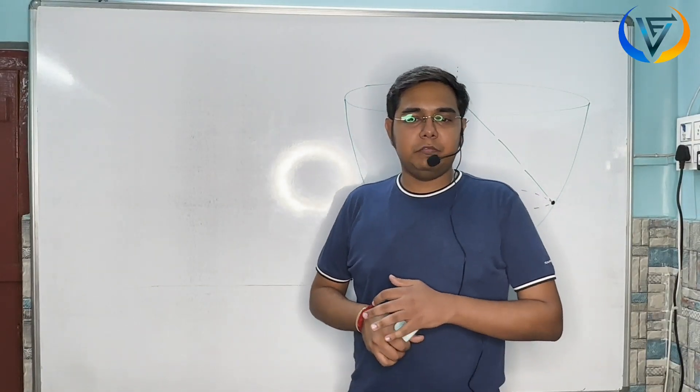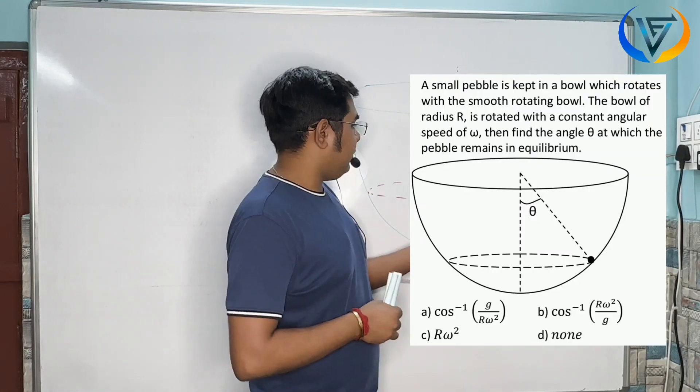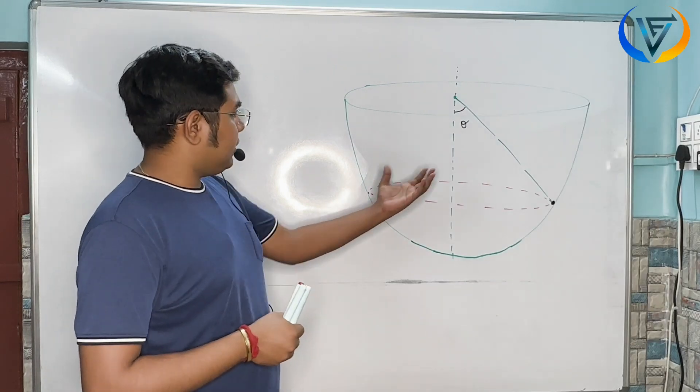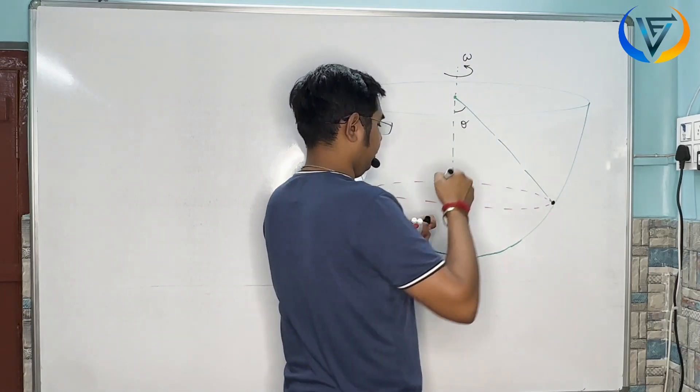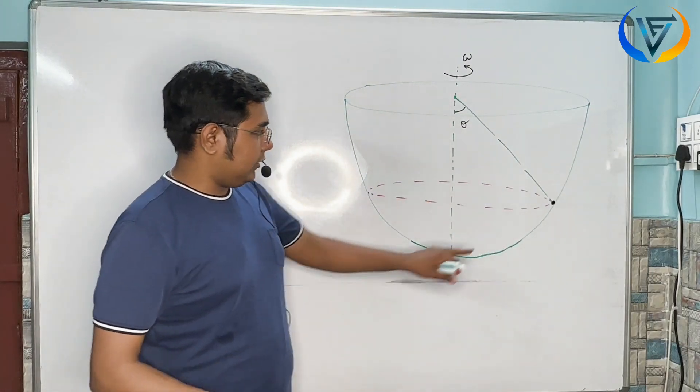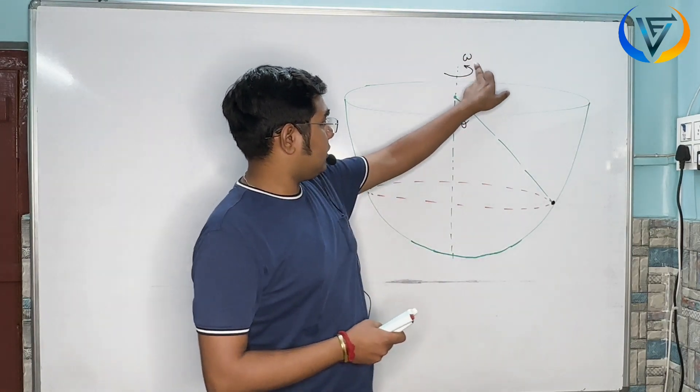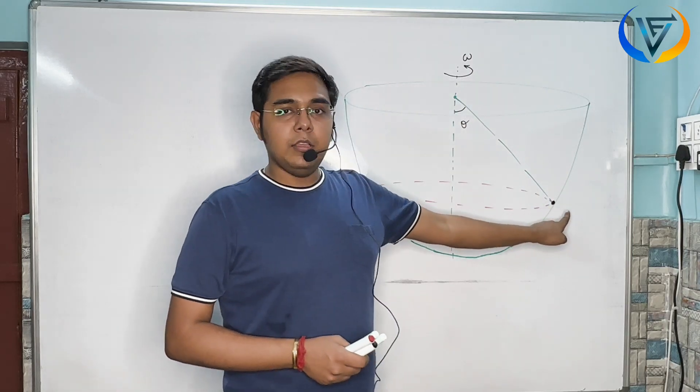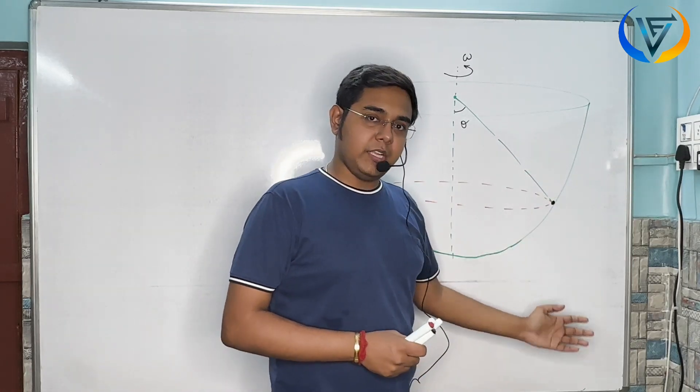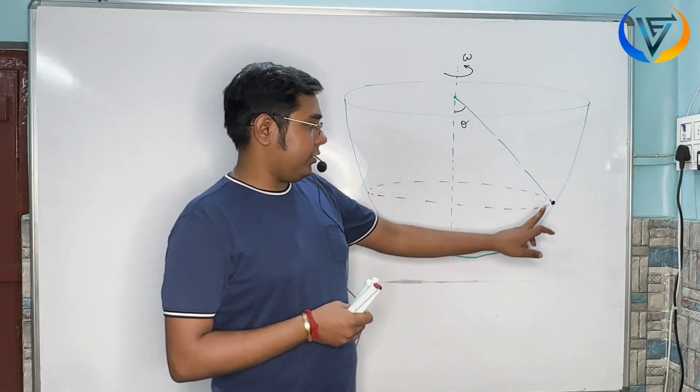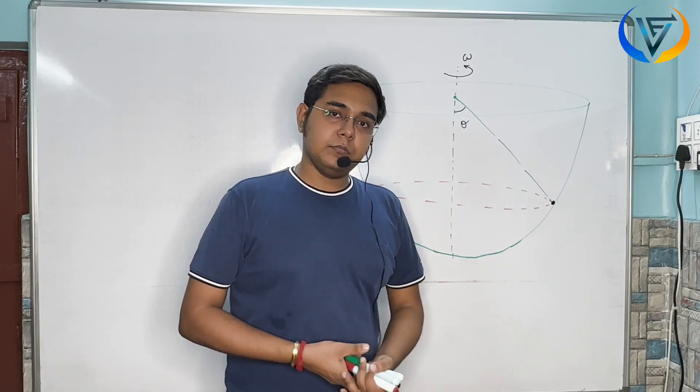We are going to discuss a very important question from UCM. As you can see on your screen, it is this question on uniform circular motion. A bob is in a conical pendulum setup rotating in a circle, and the level remains in equilibrium.